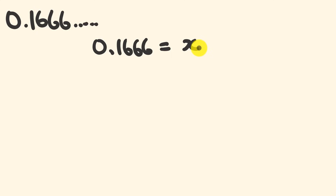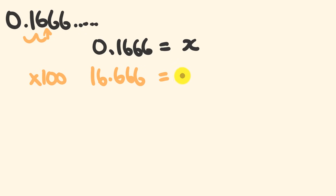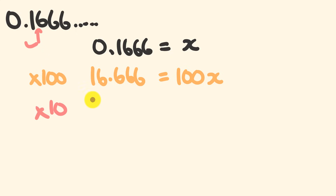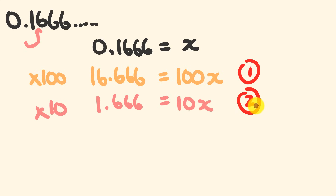For the first equation, we look for where the first repeat occurs — right there at the second and third decimal places. We have to jump two decimal places, so we multiply by 100. We end up with 16.6666 equals 100x. For the second equation, we look for just before the first repeat occurs — that's this point here. To get there we move only one decimal place, so we multiply by 10. We end up with 1.666 equals 10x.